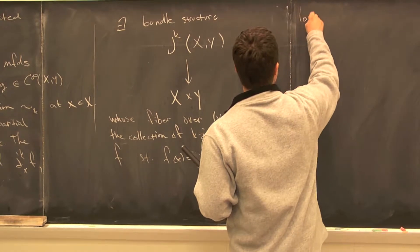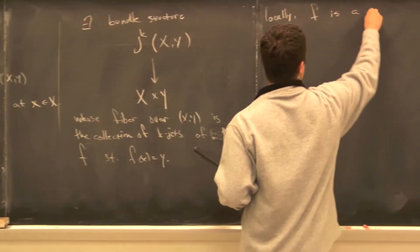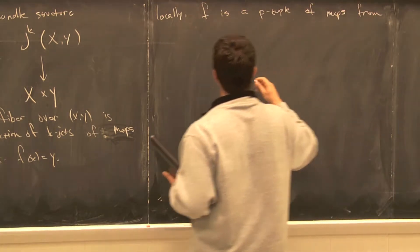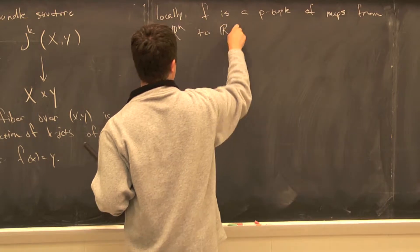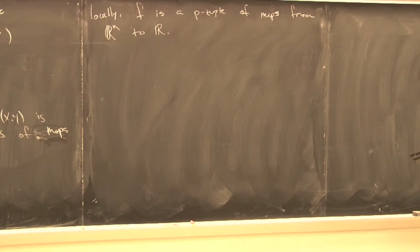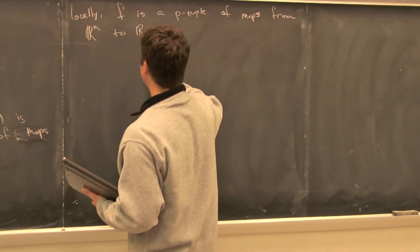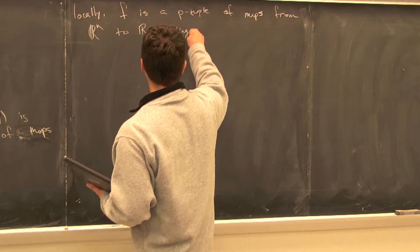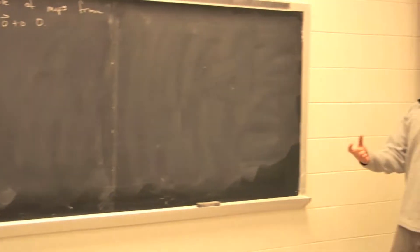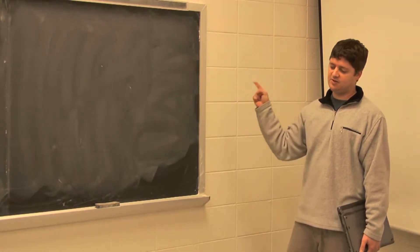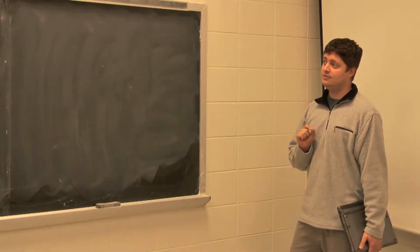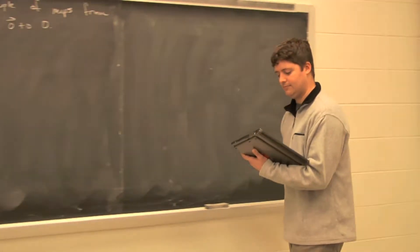Locally in x and y, f is a p-tuple of maps from R^n to R. It would have to be sending 0 to 0. You fix the origin because you've already chosen a patch around x. You've chosen one such that the origin here corresponds to the origin over there. And you want all the functions to have the same value as maps from x to y.